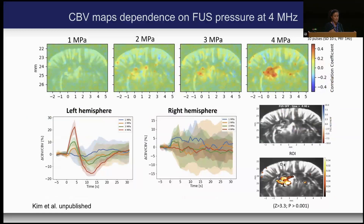You can see that the right hemisphere versus left hemisphere comparison shows CBV maps around 5% noise on the contralateral side, but much higher where we get the response at the focus of the ultrasound. Of course, you can also make a map of that.